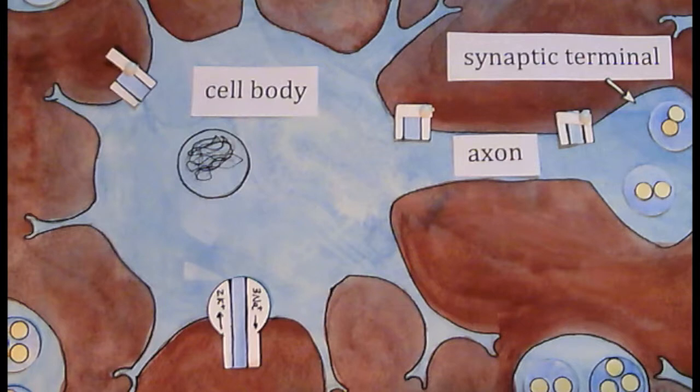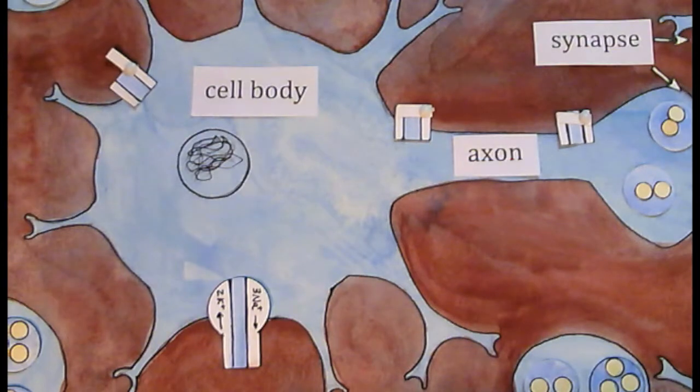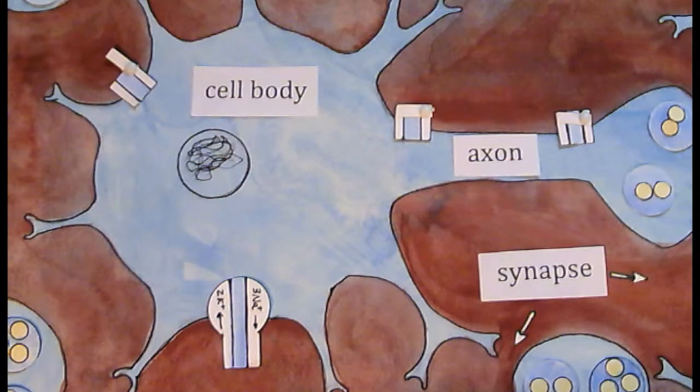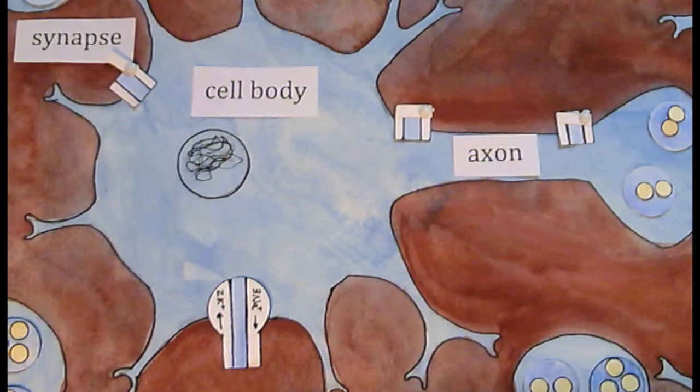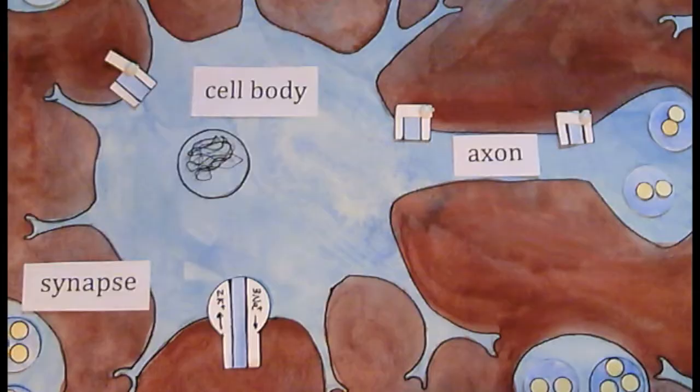This is the synaptic terminal, or the axon terminus, the end of the axon, where neurotransmitters are sent from. And this, the space between the synaptic terminal of one neuron and the dendrite of the next, is called a synapse.